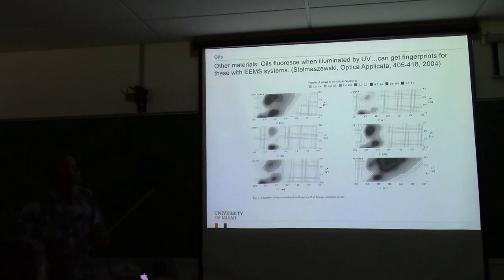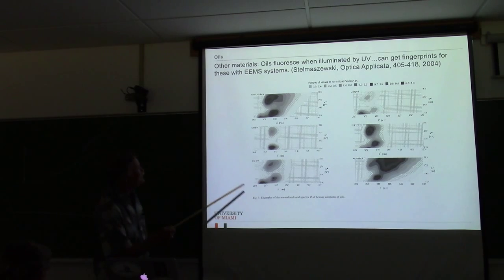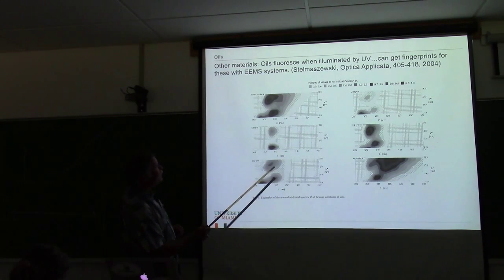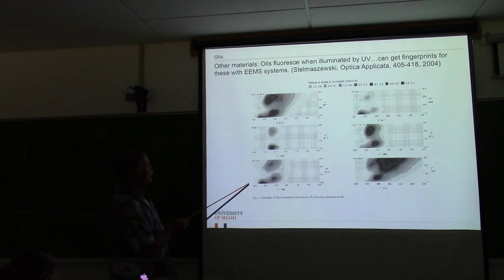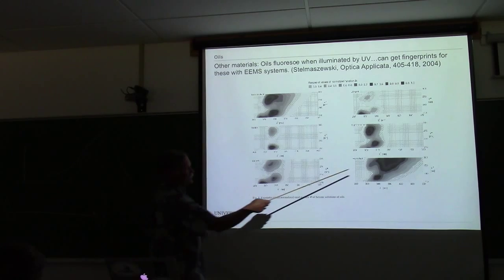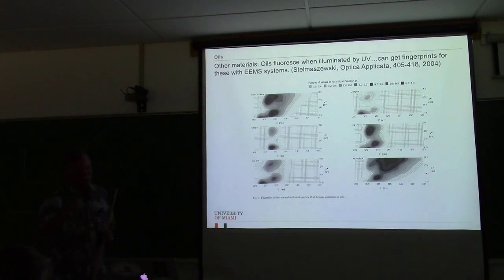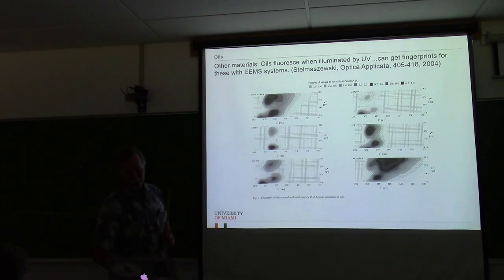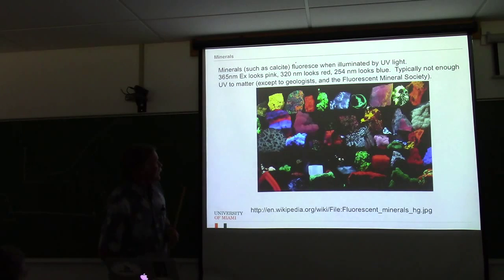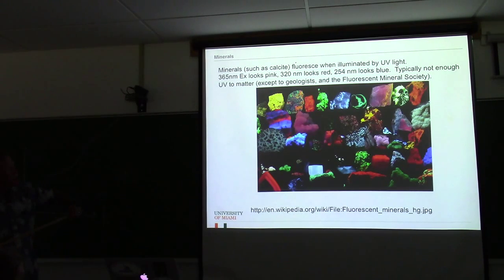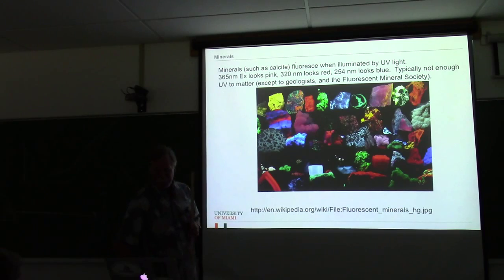Other fluorescence: oils fluoresce with UV excitation and emission out in the UV/visible, and different kinds of oils fluoresce differently — you can use them as a fingerprint to determine where oils come from in oil spills. Minerals also fluoresce when illuminated by UV light, which helps geologists tell about mineral composition. Neither is a big problem in the natural light field, but the minerals are pretty, so I included those.